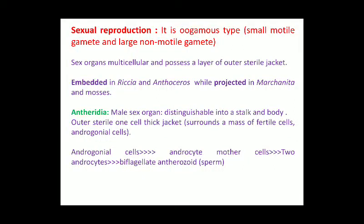Hi everyone. Today we are going to discuss sexual reproduction in bryophytes. Sexual reproduction in bryophytes is of oogamous type, which means the male gametes are small and motile, and female gametes are large and non-motile.